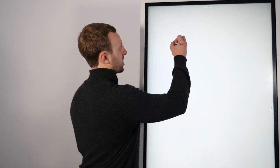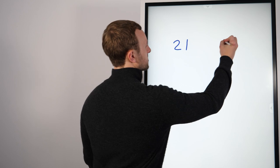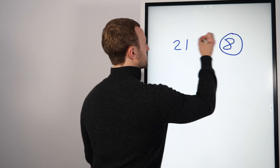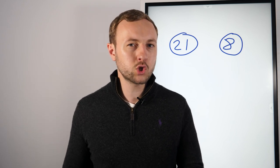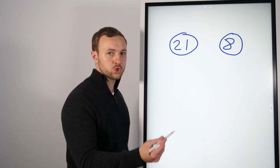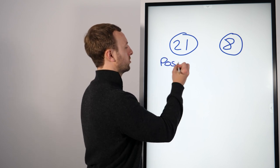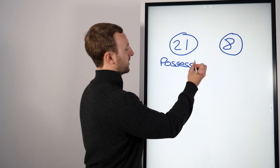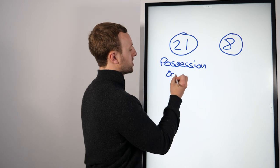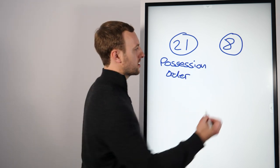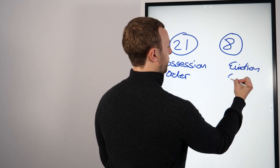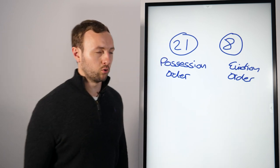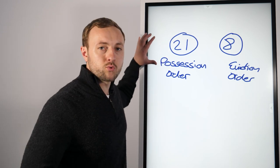The first thing we want to separate is Section 21 and Section 8. These are very different and I'll go through them separately. A Section 21 is a possession order and a Section 8 is an eviction order. It's very simple, but people get these wrong all the time.